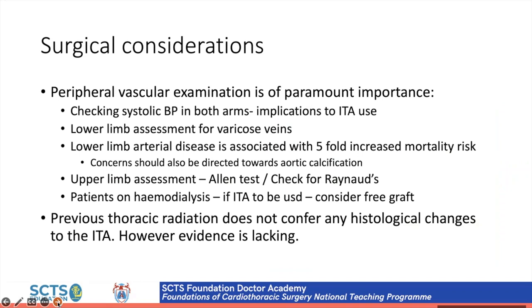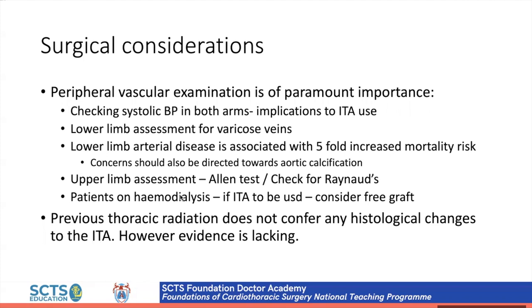Surgical considerations include peripheral vascular examination to assess conduit harvest from the legs, investigating differing blood pressures between arms for evidence of dissection or subclavian thrombosis, looking for varicose veins, assessing feasibility of radial artery harvesting, and considering whether thoracic radiation from previous chest cancer precludes use of the left internal mammary artery.